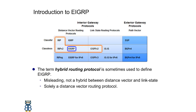The term hybrid routing protocol is sometimes used to define EIGRP, but that is a wrong statement. EIGRP is not a hybrid between distance vector and link state protocols. It is solely a distance vector routing protocol.